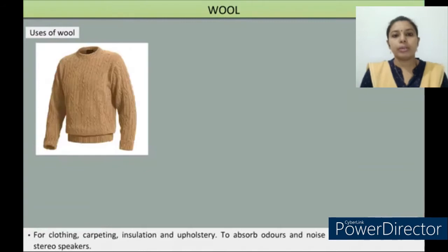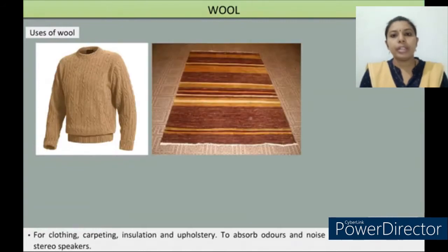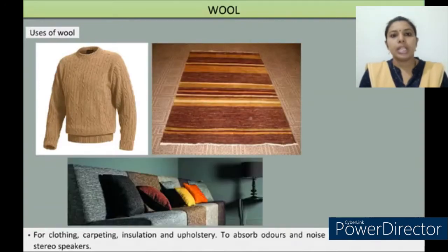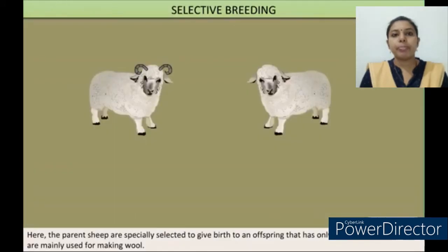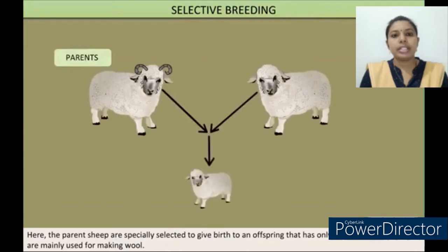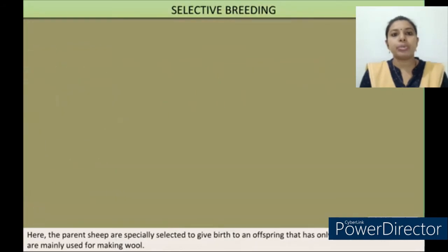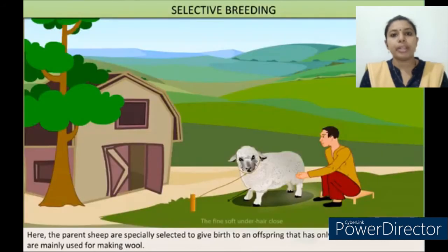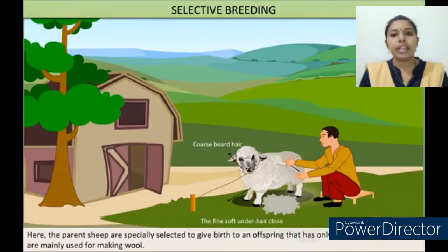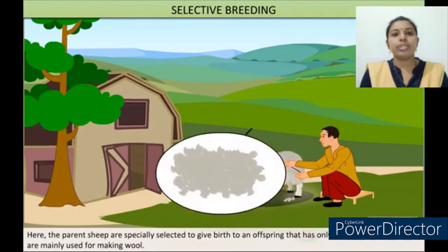Uses of wool: it's used for clothing, carpeting, insulation, etc. Sheep breeding: the parent sheep are specially selected to give birth to offspring that have only soft underhairs, which are mainly used for making wool.